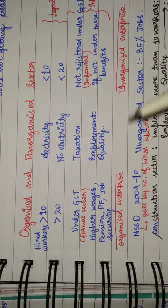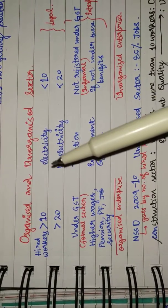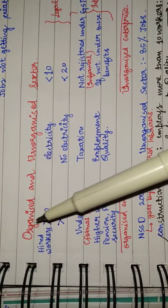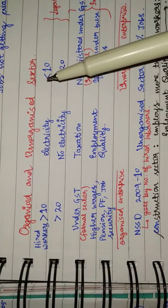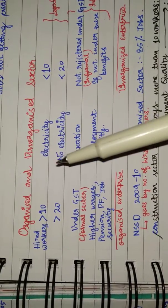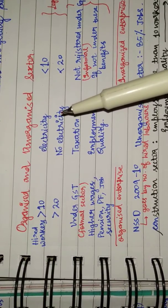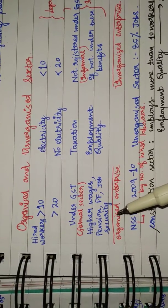The organized enterprise and unorganized enterprise is: if an enterprise has input of electricity and has hired workers more than 10, then it is an organized enterprise. Vice versa, if there is no electricity usage as an input, then this goes to 20 - greater than 20 is organized enterprise.